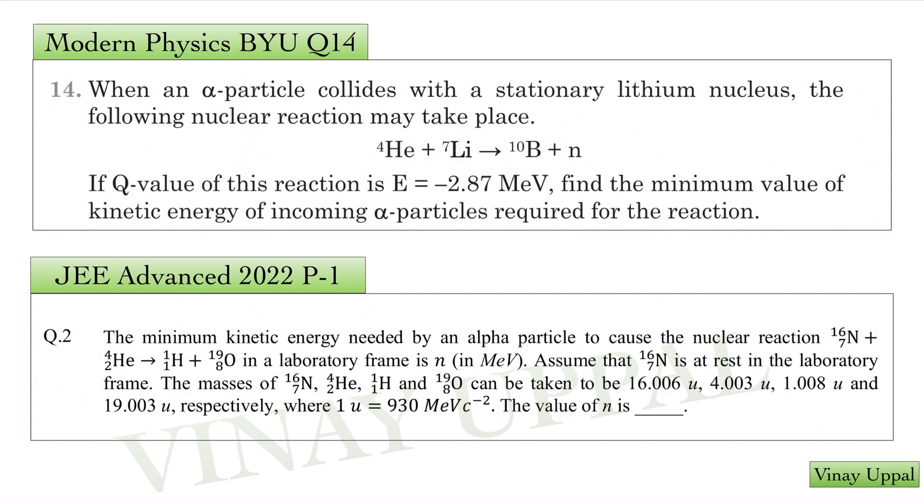This was a question from the Pathfinder book. Find the minimum value of the kinetic energy of the incoming alpha particles required for the reaction. And JEE Advanced question was: minimum kinetic energy needed by an alpha particle to cause a nuclear reaction. The reaction was different, but the concept was exactly the same.